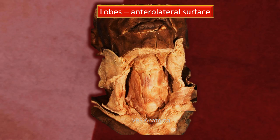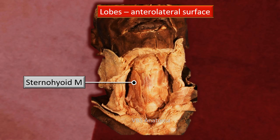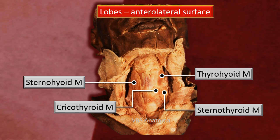The anterolateral surface: although the gland is reasonably close to the surface, the strap muscles cover the lobe's anterolateral surface. These are the strap muscles: sternohyoid, thyrohyoid, and sternothyroid. Cricothyroid is not a strap muscle — it is seen immediately above the isthmus, attached to the cricoid cartilage, and is more an intrinsic muscle of the larynx. So except the cricothyroid, all the others are strap muscles.